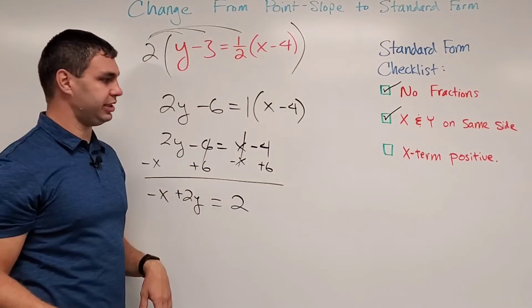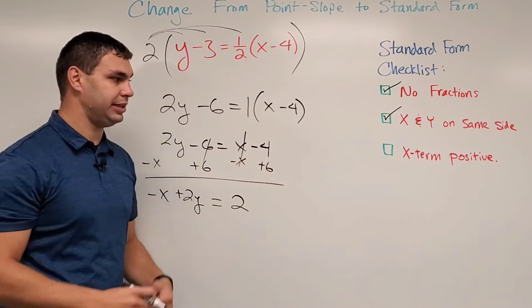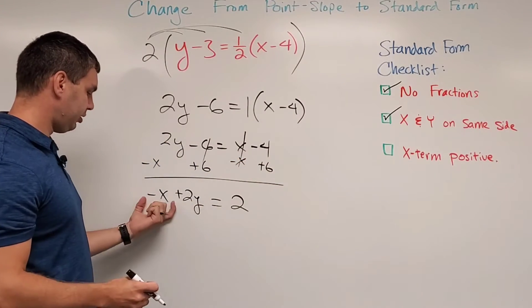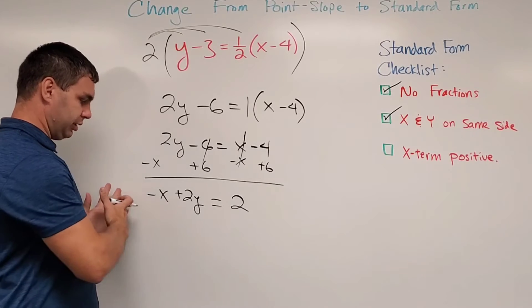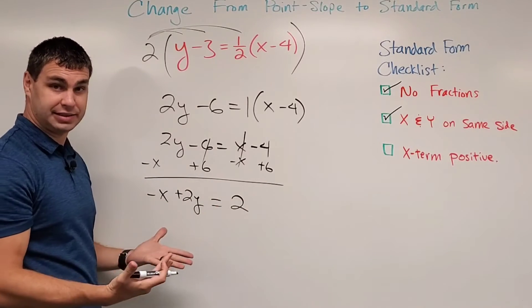Which means now all that's left is to get my x term positive. Currently the x term is negative, so whenever something is negative and you need it to be positive without changing anything else, what you can do is multiply the entire equation by negative 1.